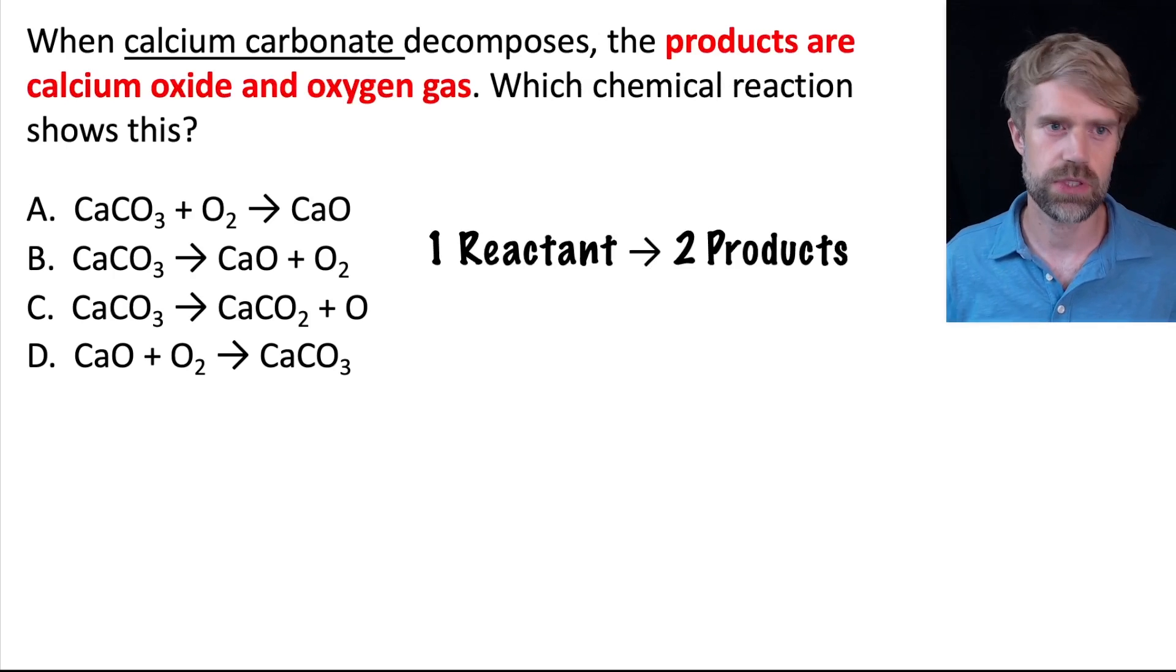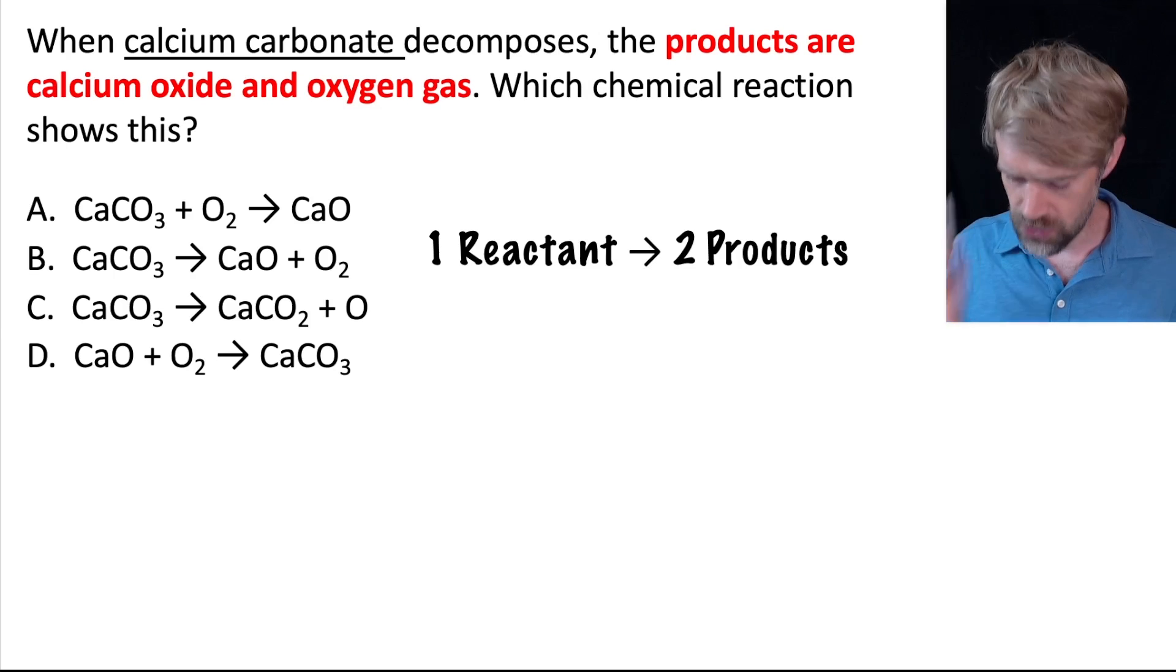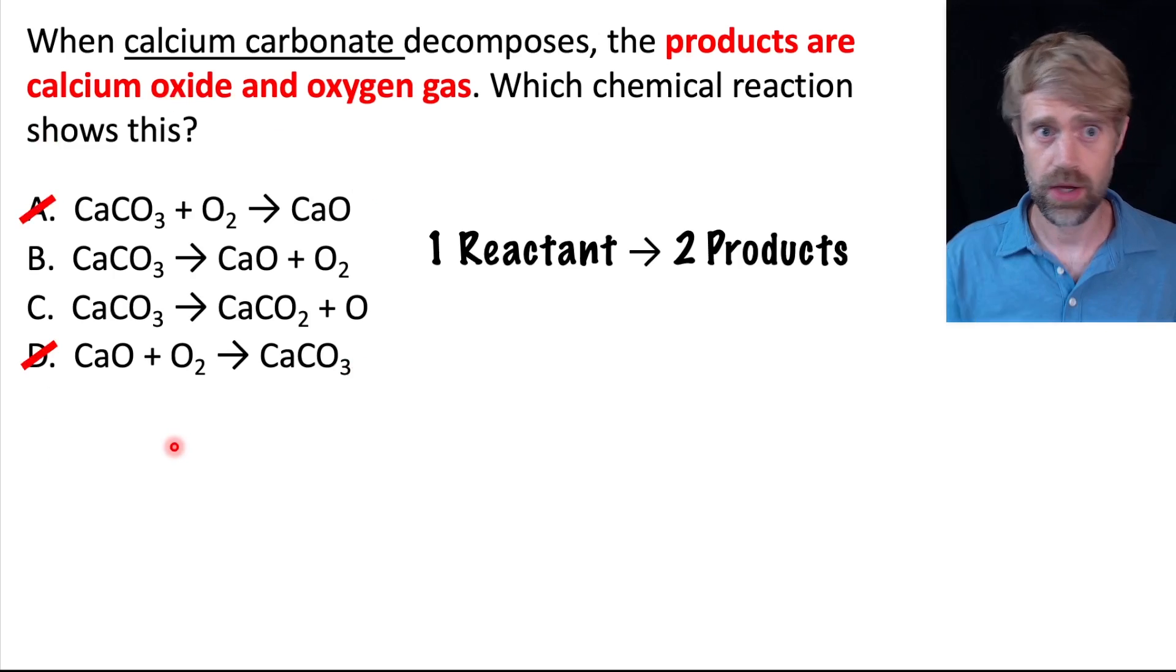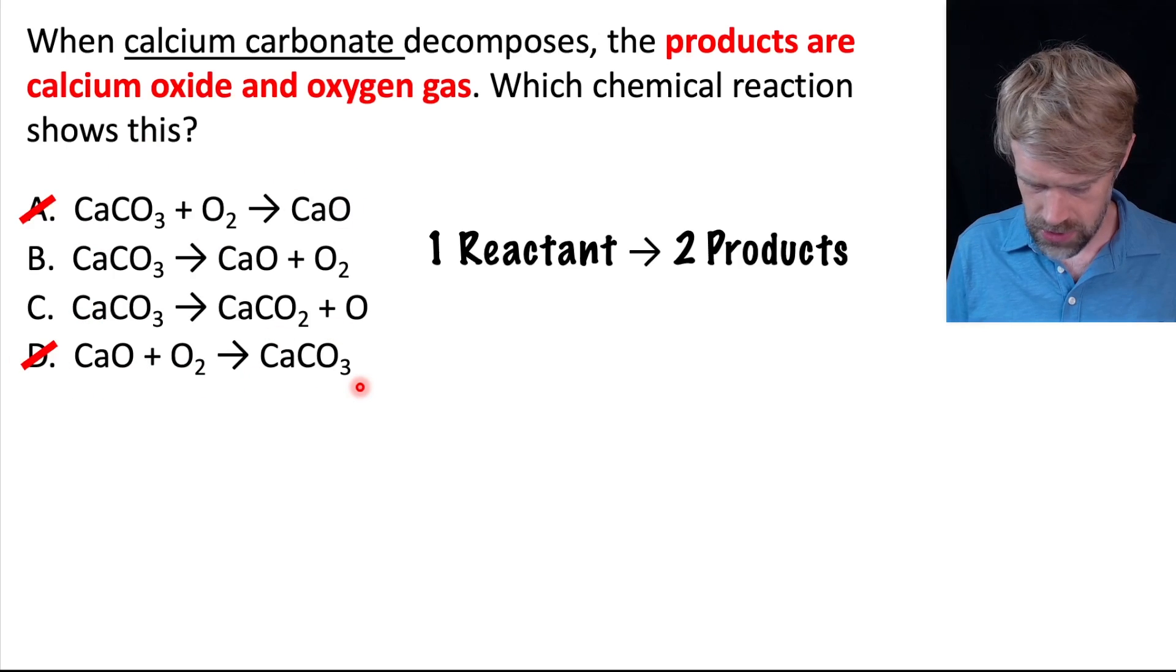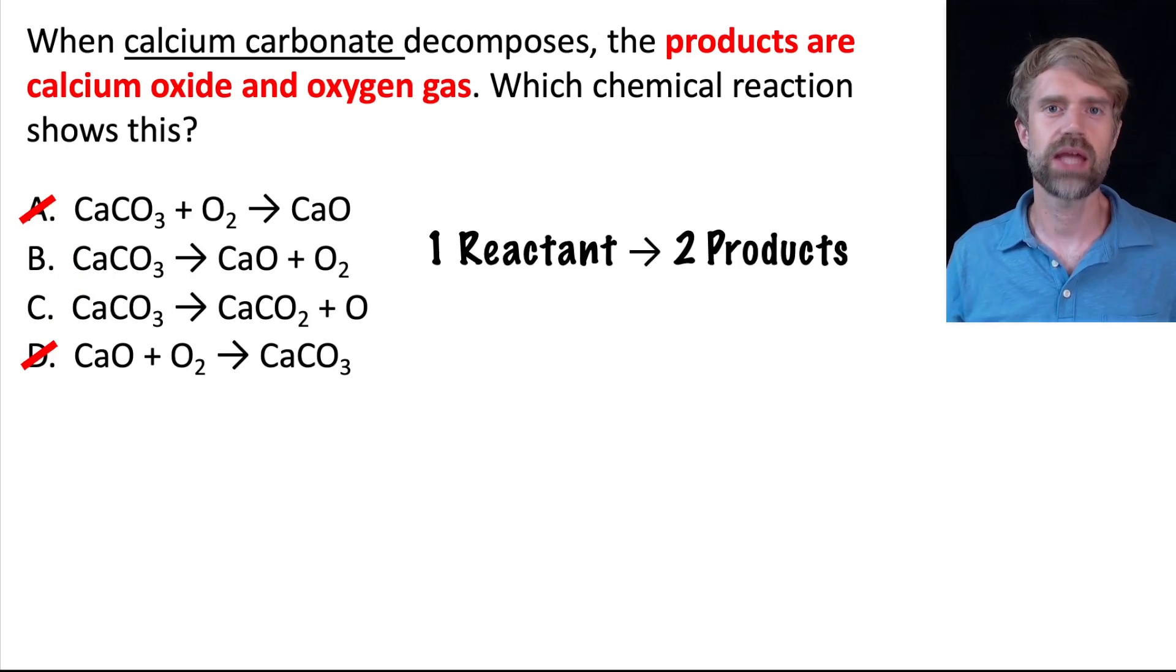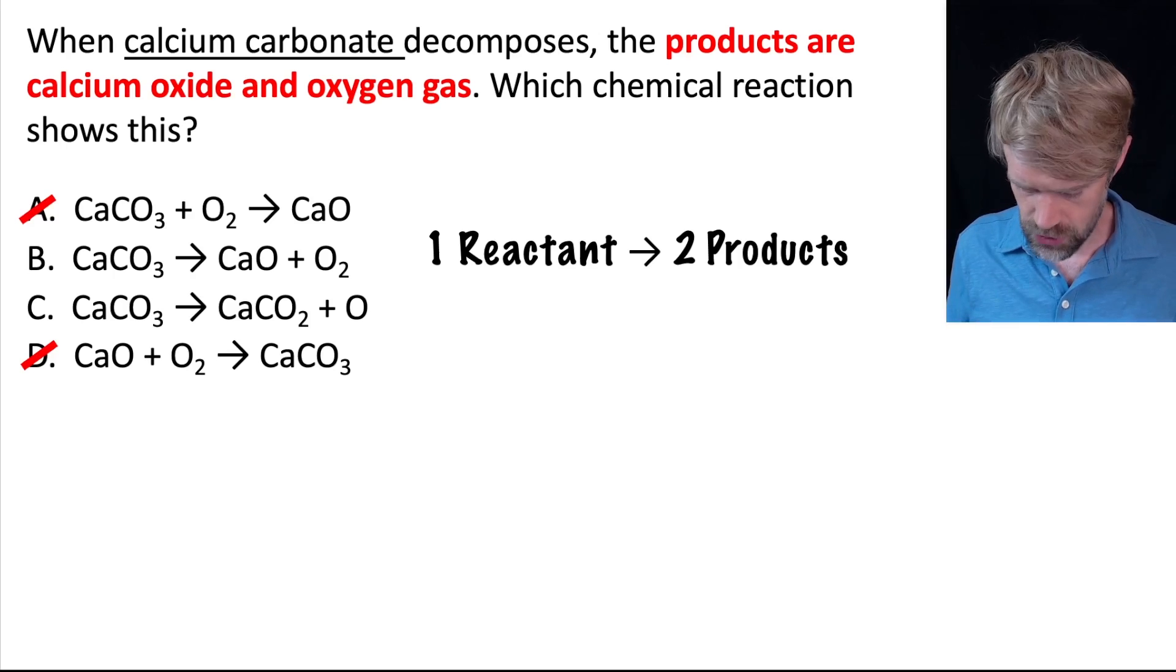So let's look for clues here. You probably don't know the formula for some of these substances, but if you read the question carefully, you know there's only one reactant, calcium carbonate decomposes. And there are two products, calcium oxide and oxygen gas. So one reactant becomes two products. So we are looking for a reaction over here that has one reactant and two products. That means we can immediately cross off choices A and choices D. Because both of these options have two reactants and one product. So get rid of them. And look, we've already narrowed it down to two options B and C. At this point, you could randomly guess and still have a 50% chance of getting the question right.